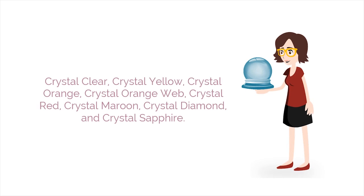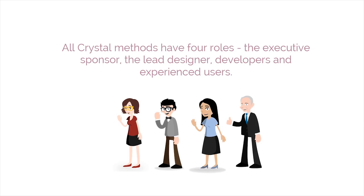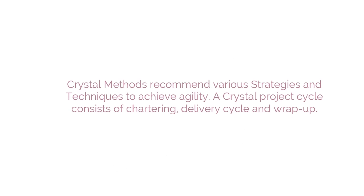The Crystal family is divided into Crystal Clear, Crystal Yellow, Crystal Orange, Crystal Orange Web, Crystal Red, Crystal Maroon, Crystal Diamond, and Crystal Sapphire. All Crystal methods have four roles: the executive sponsor, the lead designer, developers, and experienced users. Crystal methods recommend various strategies and techniques to achieve agility. A Crystal project cycle consists of chartering, delivering cycle, and wrap-up.